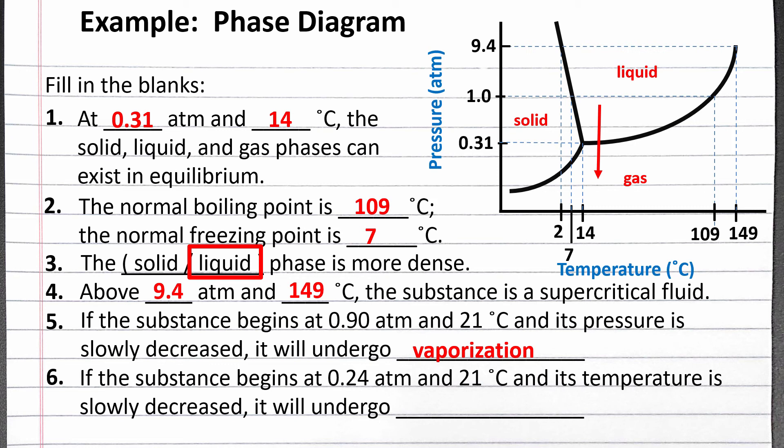For the next statement, we want to know what phase change occurs when the substance begins at 0.24 atmospheres and 21 degrees Celsius and its temperature is slowly decreased. We are passing from the gas phase directly to the solid phase, which is deposition. These are some of the helpful pieces of information we can obtain from a phase diagram.